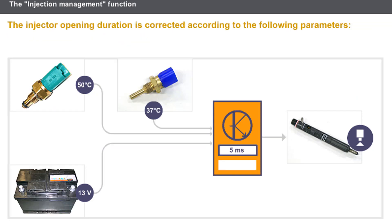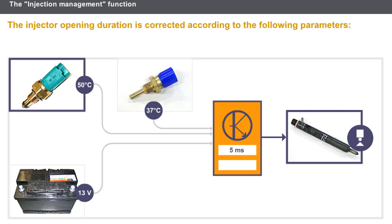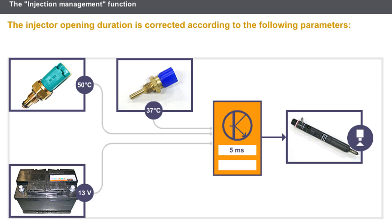The injector opening duration is corrected according to the following parameters: the diesel fuel temperature, the coolant temperature, and the battery voltage. Fuel viscosity is reduced with temperature. The computer uses the coolant temperature signal to apply enrichment programming when the engine is cold, and the injector power supply affects the actual opening duration of the injectors.